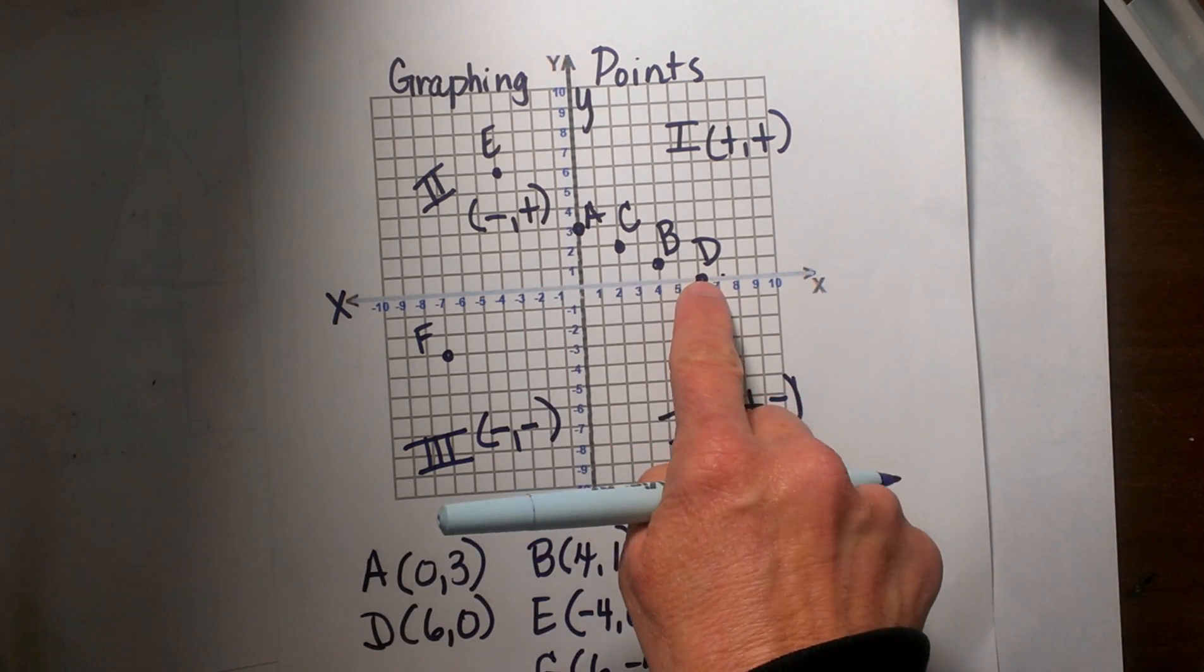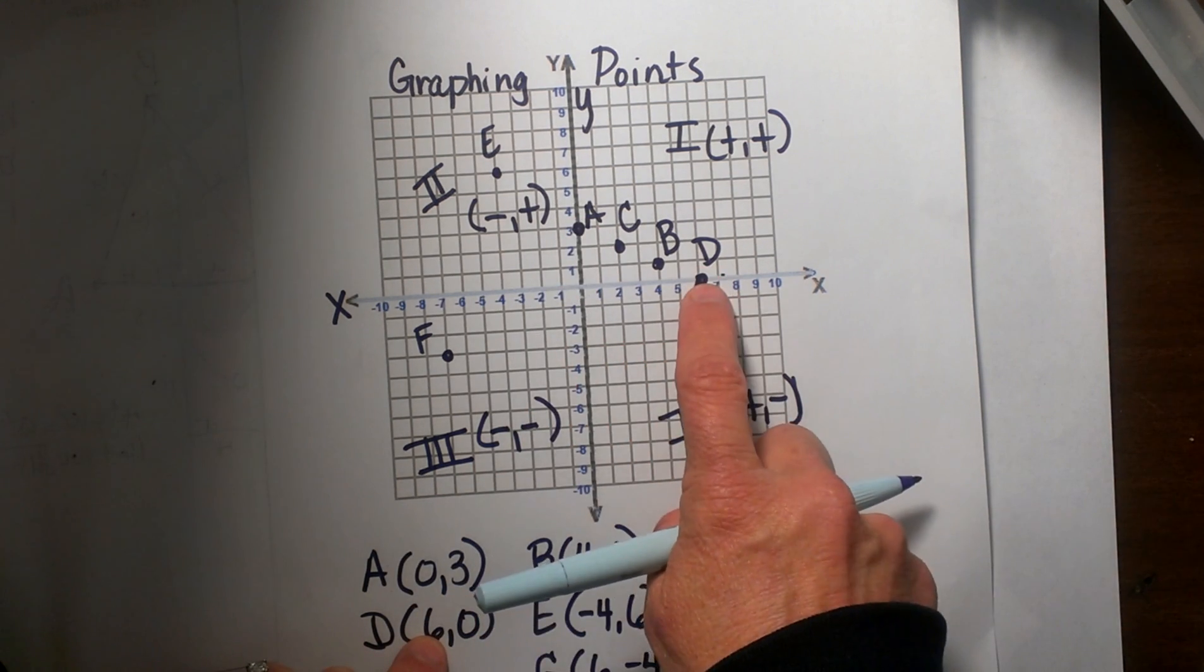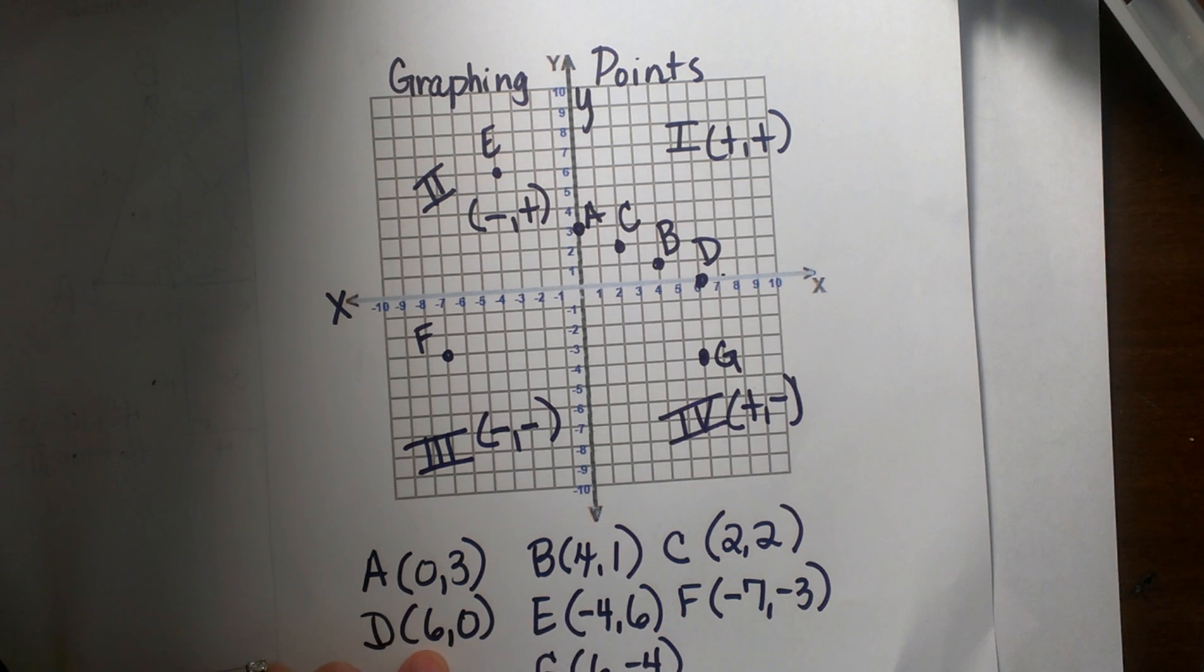Now when you end up landing on an axis that means one of your variables or one of your coordinates is 0. So (0,3) landed on the y-axis and (6,0) landed on the x-axis because that is where their values are.